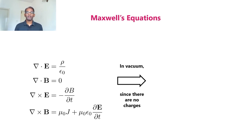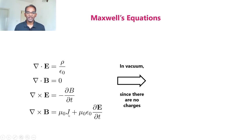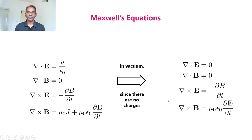In vacuum, there are no free charges. Since there are no charges, the charge density rho will be equal to zero, and there won't be any currents — meaning in the fourth equation, j is also equal to zero. So in that case, Maxwell's equations get modified to: del dot E equal to zero, del dot B equal to zero, del cross E equal to minus ∂B/∂t, and del cross B equal to mu zero epsilon zero ∂E/∂t.